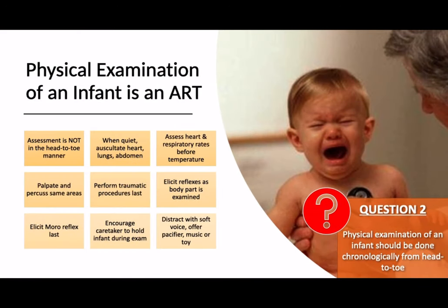Physical examination of an infant is not necessarily difficult, but you should see it as an art. Your assessment is not necessarily in the head-to-toe manner like what you do in an adult. When the patient is quiet, you can auscultate the heart, lungs, and abdomen first, assess heart and respiratory rates before doing temperature, then do palpation and percussion of the same areas. Traumatic procedures like examining the ear with an otoscope or the throat with a tongue depressor are performed last.